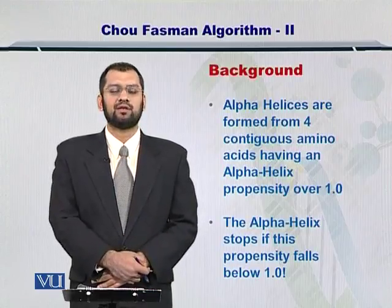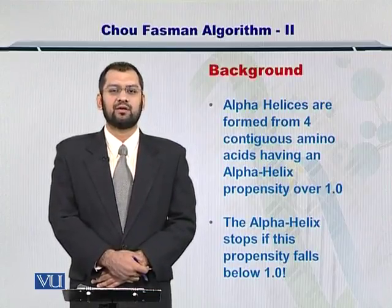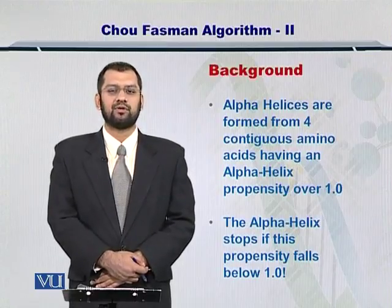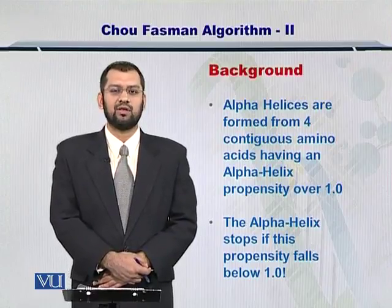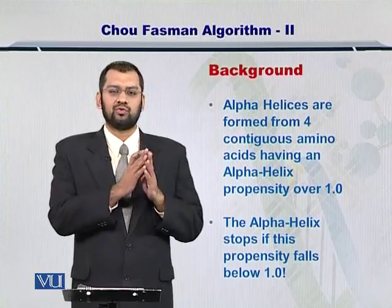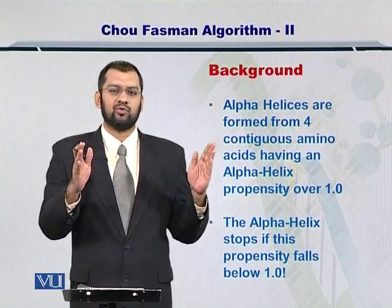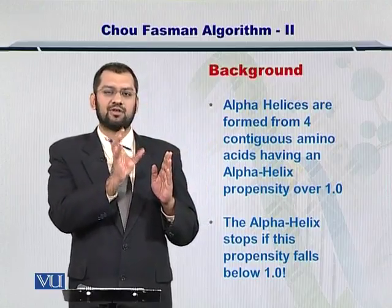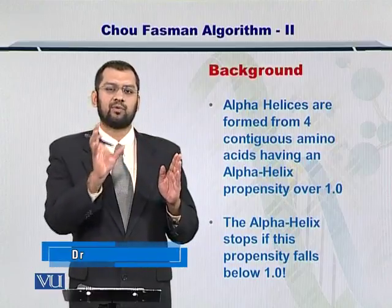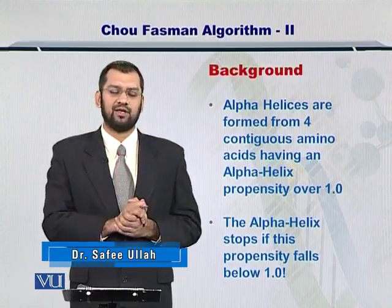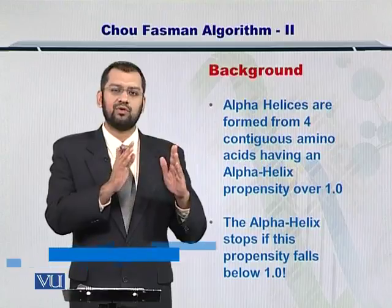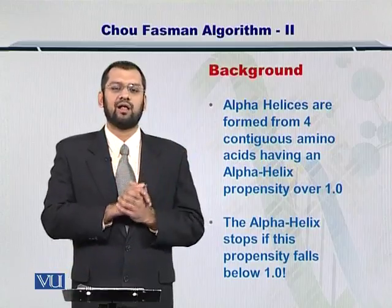An alpha helix can be extracted for secondary structure formation if the propensity of four contiguous amino acids is greater than one for alpha helix. This process is repeated to extend the alpha helix on both sides, and on either side of this first alpha helix turn we continue to calculate the propensity for alpha helices. As long as these propensities are more than one, we continue to expand our alpha helix.